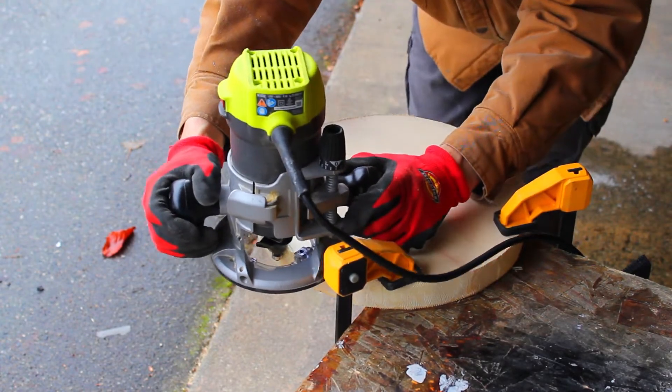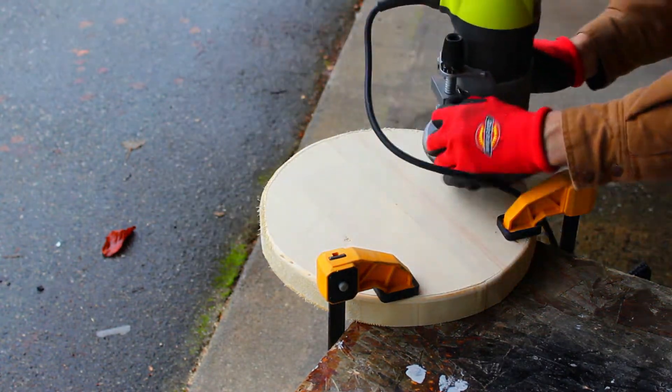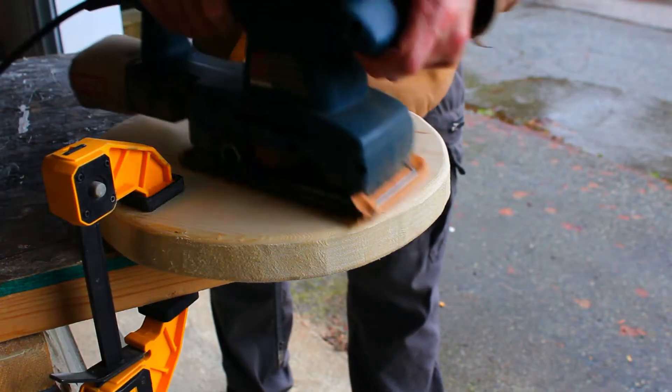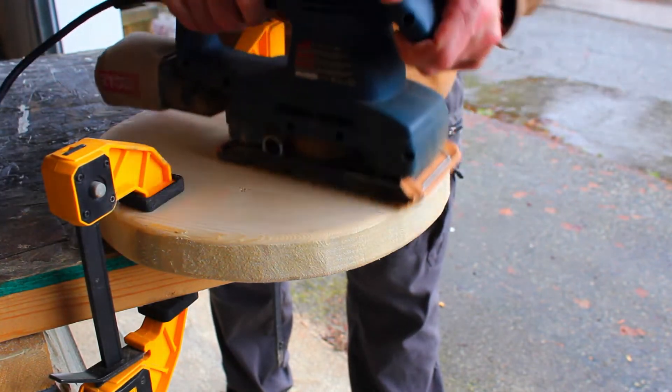The router will give both sides a nice rounded edge. I'll use the sander to smooth out the surfaces and the rounded side edges.